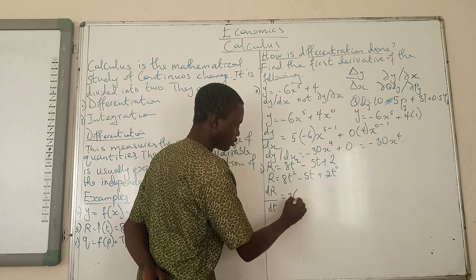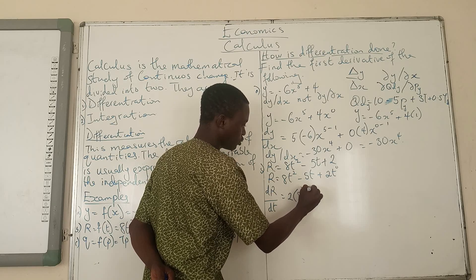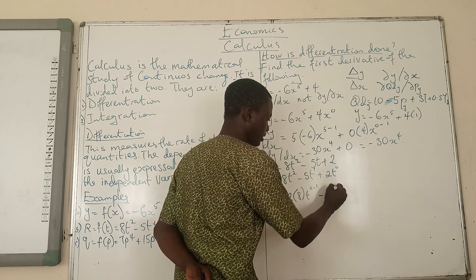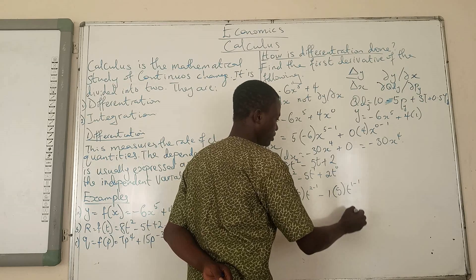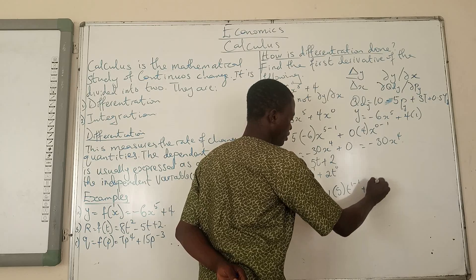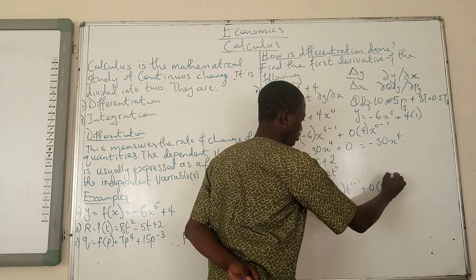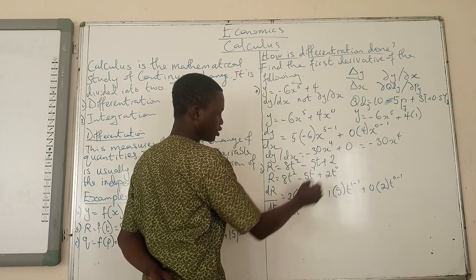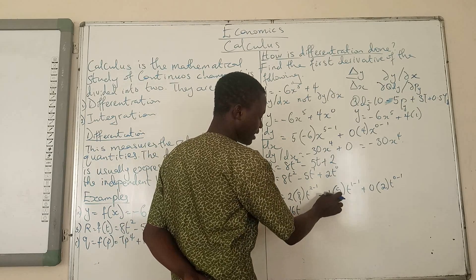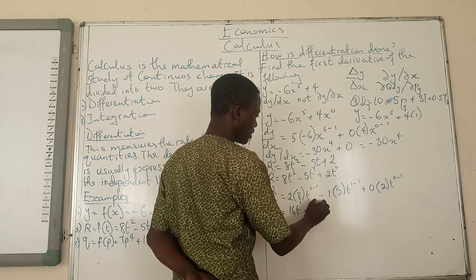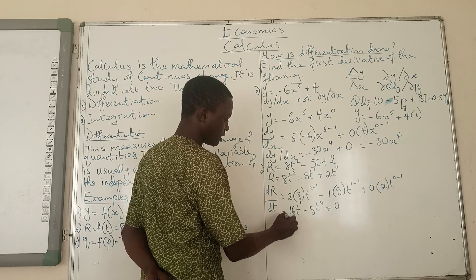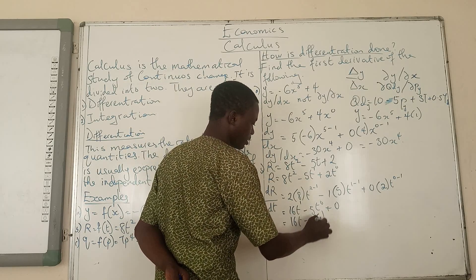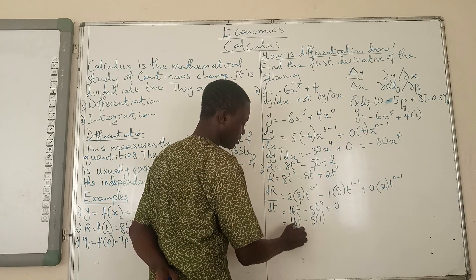This gives us: 2 times 8 is 16, so 16T raised to power 1. Then minus 1 times 5 is minus 5, T raised to power 0. Then plus 0. Now T raised to power 0 is 1, so minus 5 times 1 is minus 5. Therefore dR/dT equals 16T minus 5.